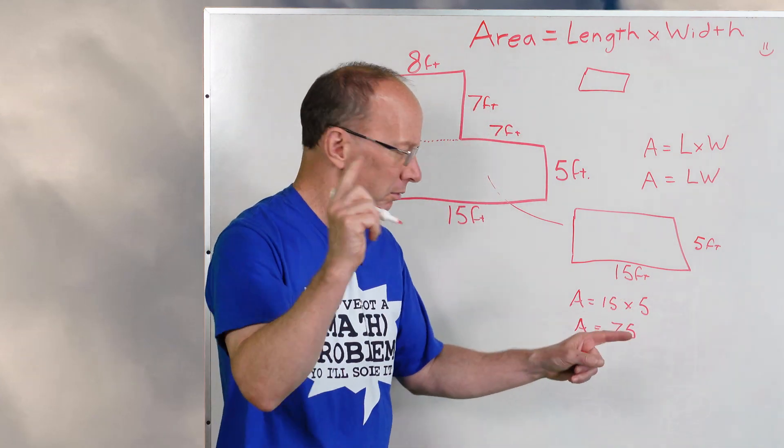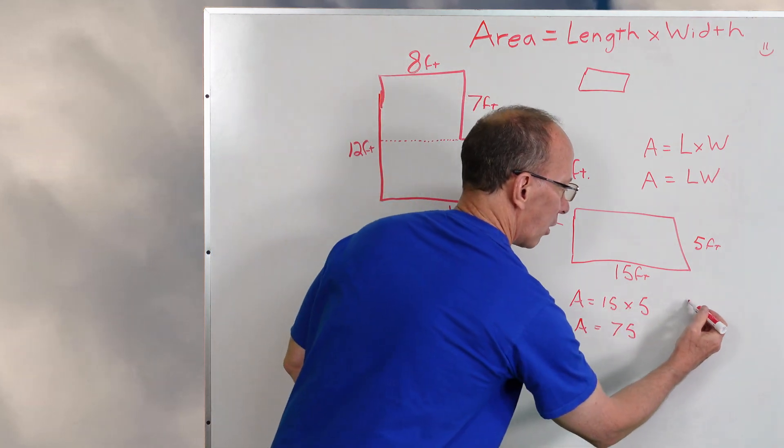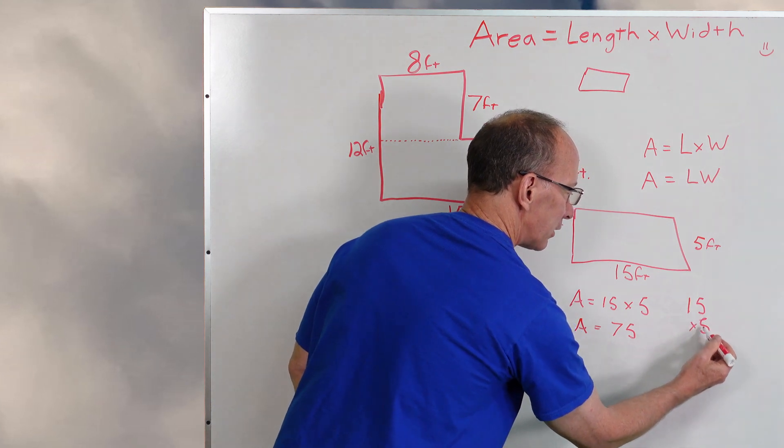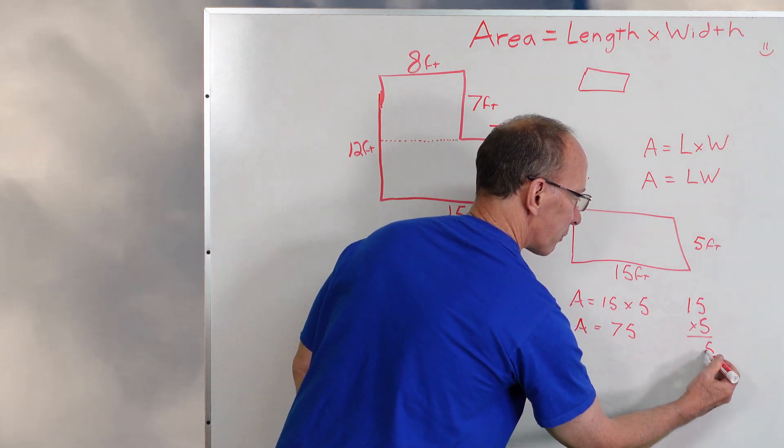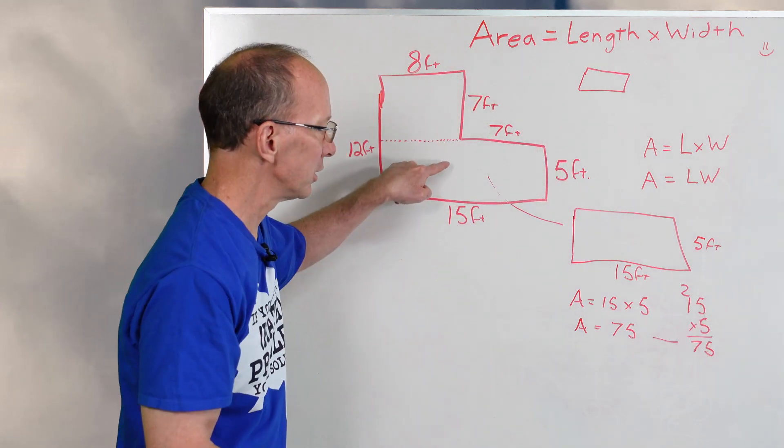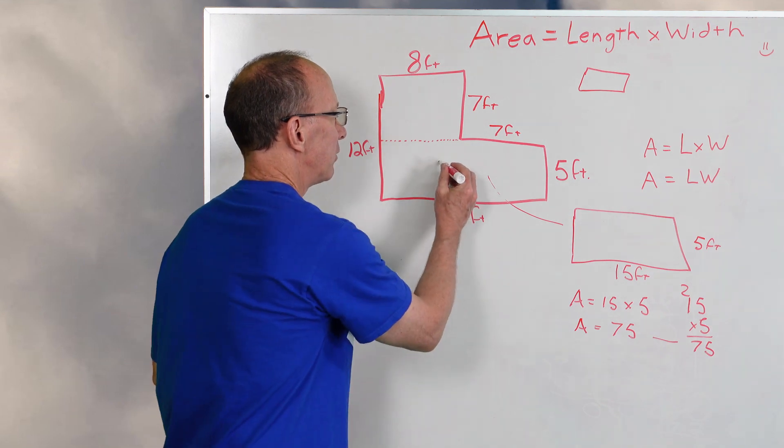If that was a little challenging for you, you can always just multiply it like this: 15 times 5. 5 times 5 is 25, carry the 2, and then you get 75. Now I figured this one out here - I'm going to put 75.